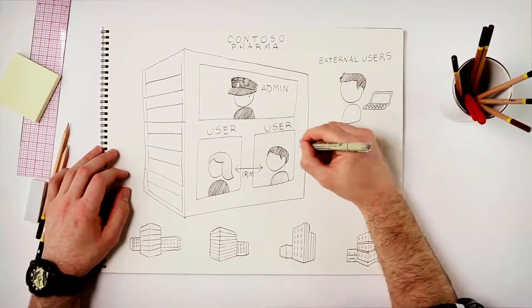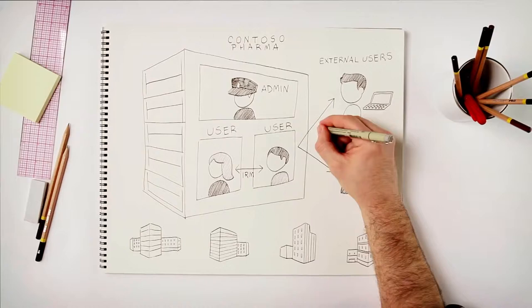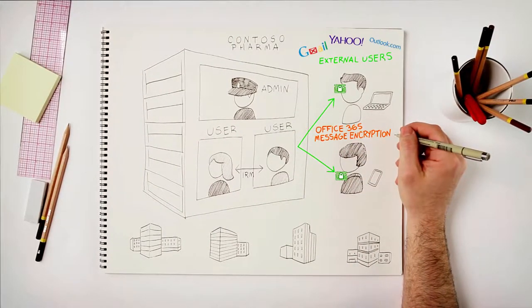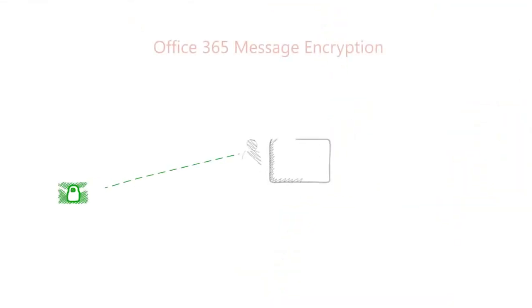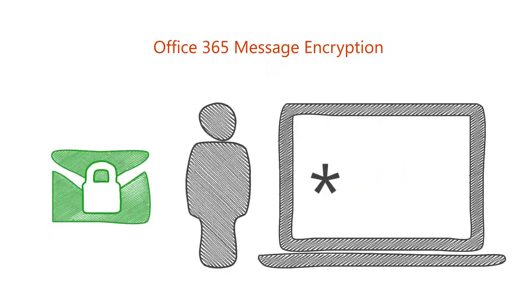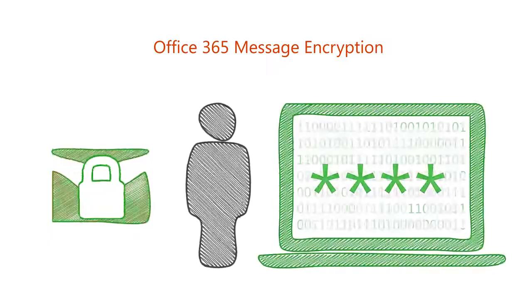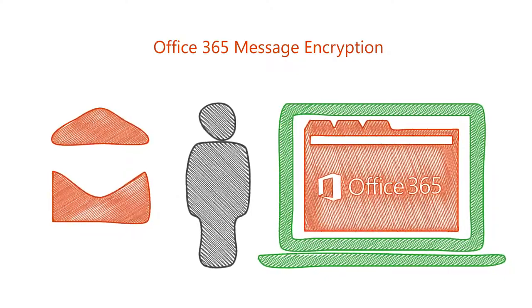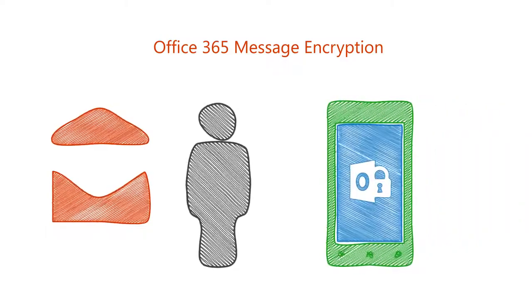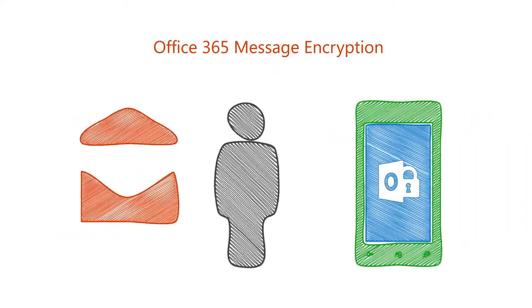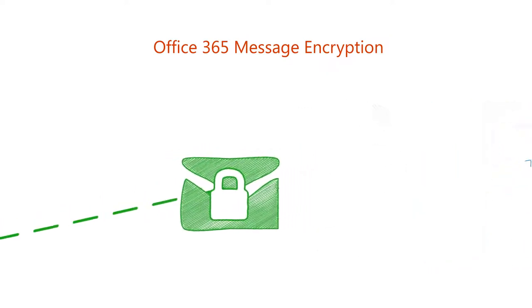Second is Office 365 Message Encryption, which allows you to send encrypted emails to anyone. This is especially important when the external recipient is using an unknown email client. The recipient simply needs a Microsoft account or a unique one-time passcode to authenticate and access the message. The recipient can view and respond to the messages from their browsers on desktop or mobile devices using Office 365 Message Encryption apps, and all those messages will continue to be encrypted.